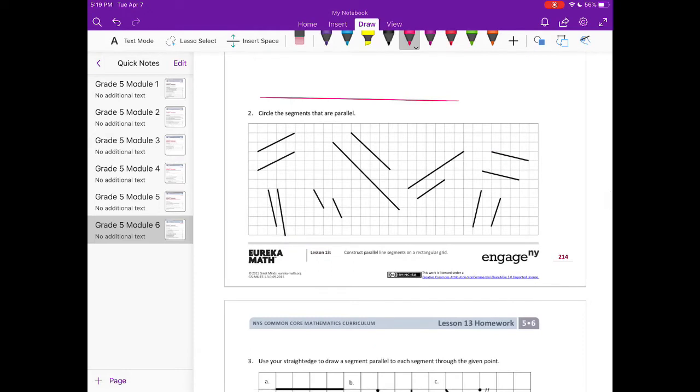Number 2, circle the segments that are parallel. So, remember parallel means that they're never going to intersect. So, it looks like the first one, these two lines are parallel. They could go on and on forever and never intersect. These lines look like they will eventually intersect right somewhere around there. So, they're not parallel.